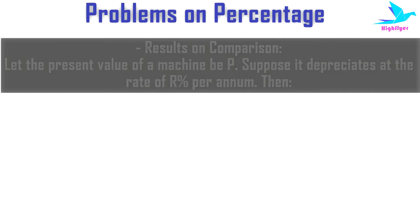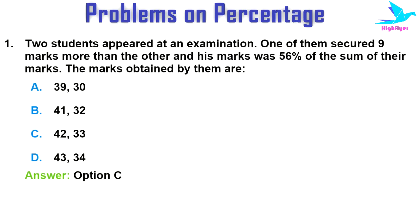Now let's look at some examples. Example one: two students appear at an exam; one of them secures 9 marks more than the other, and his marks were 56 percent of the sum of their marks. The marks obtained by them are — options are: 39 & 30, 41 & 32, 42 & 33, or 44 & 34. The right option is option C: 42 and 33.